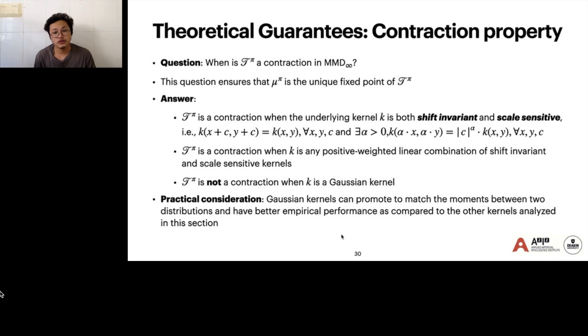When is the distributional Bellman operator a contraction with respect to the infimum MMD? The answer is it's a contraction when the underlying kernel is both shift-invariant and scale-sensitive. It's also a contraction when the kernel is any positive weighted linear combination of shift-invariant and scale-sensitive kernels. Unfortunately, it's not a contraction when K is Gaussian kernel. But in practice, Gaussian kernels can actually help to match the moments between two distributions quite well. It actually has better empirical performance as compared to the other kernels analyzed in this section.